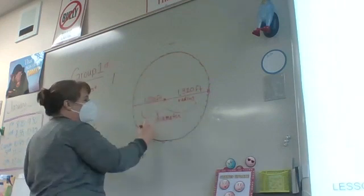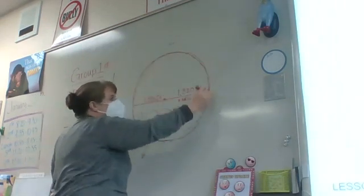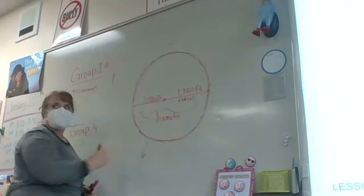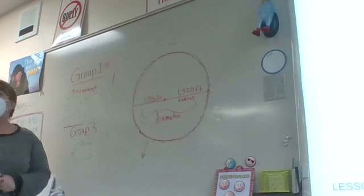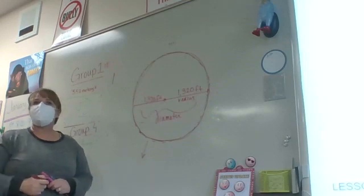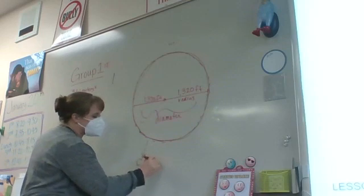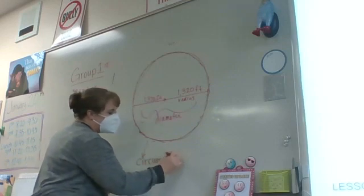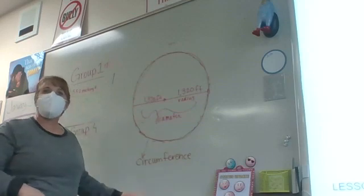So everything on the outside of this is not getting water. So what do we call—and I know that's what we're talking about, area—but let's talk about this. Does anybody know what the outside of a circle is called? On a rectangle and a square it's called perimeter, but on a circle it's called what? It's the circumference.